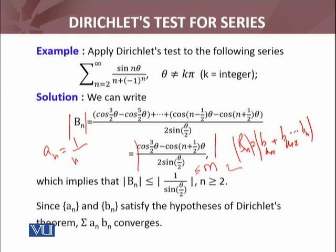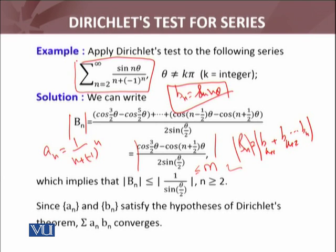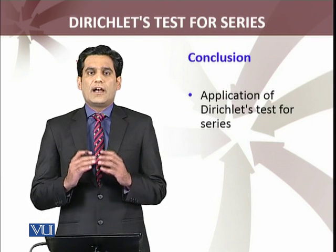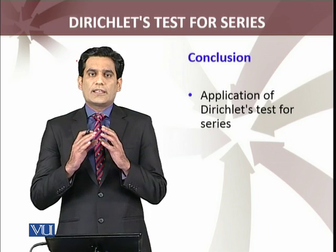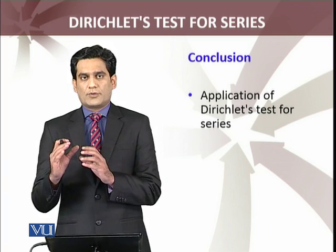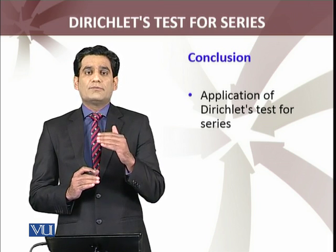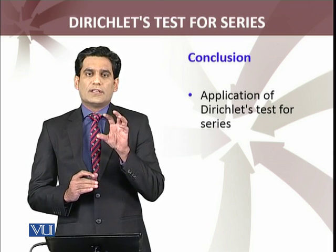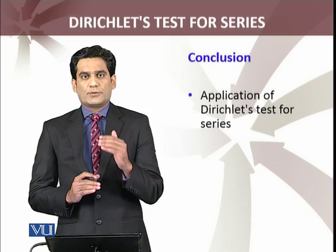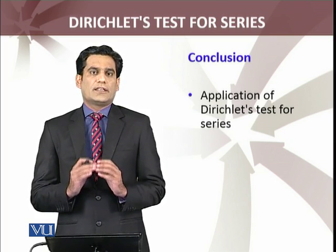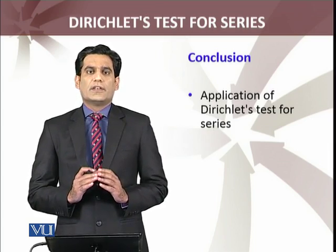Dirichlet test hypothesis - all the conditions are satisfied whenever I take an equals 1/(n+(−1)^n) and whenever I take bn equals sin nθ. Hence I can apply Dirichlet test and conclude that this series is convergent. So we have applied the Dirichlet test on certain examples. You have to decide how to recognize an and recognize bn. After the recognition of an and bn, you will check whether with these an and bn that you have chosen, the conditions of the test hypothesis are satisfied or not. If they are satisfying, then you can conclude that the series is convergent.